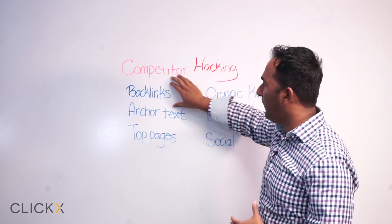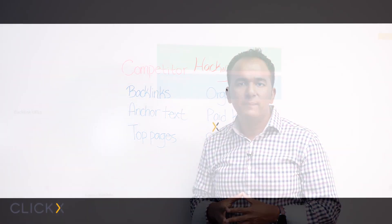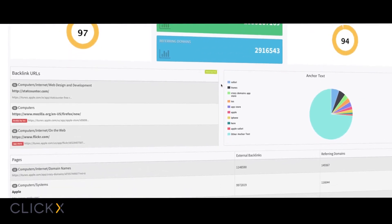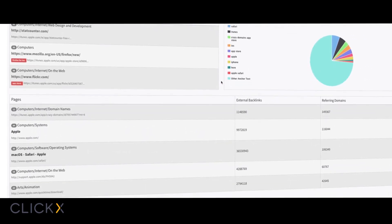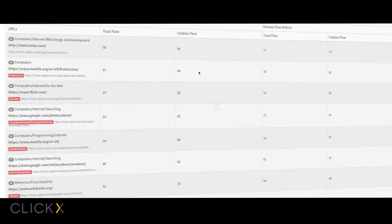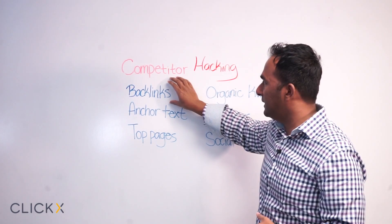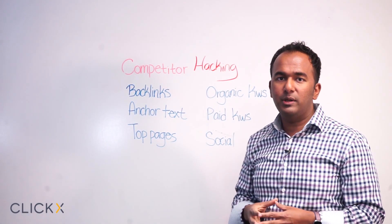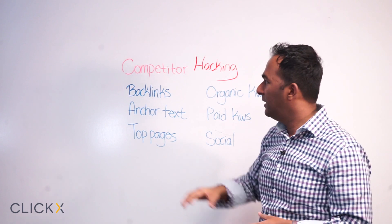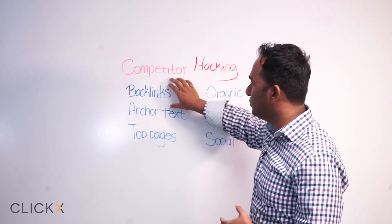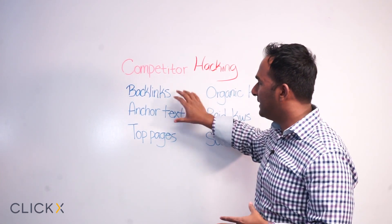The first thing I put a lot of importance on is backlinks. Based on citation flow and trust flow, we break this down so you can see the most trustworthy links this competitor has and how many of them there are, sorted from most important to least important. Look at where they got these links from, how old these links are, and how often they go back and acquire new links. This information is really critical for long-term success.